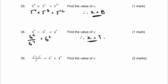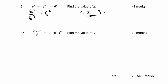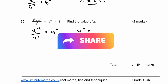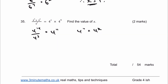For the very final question on this worksheet: 4 to the power of 9 plus 5 is 14, divided by 4 to the 3, equals 4 to the 11. So for 4 to the 11 to equal 4 to the x times 4 to the power of 4, we're basically saying it must be 4 to the power of 7 times 4 to the power of 4, because we add the indices together. Therefore x must equal 7.